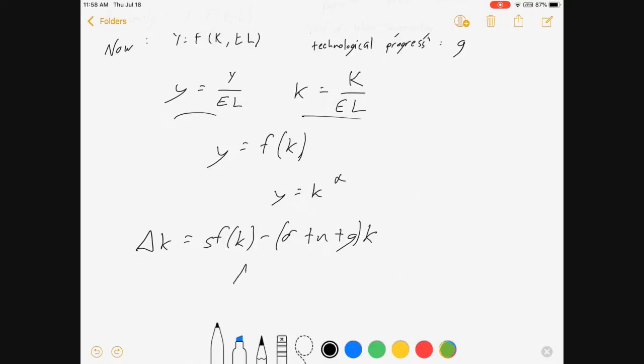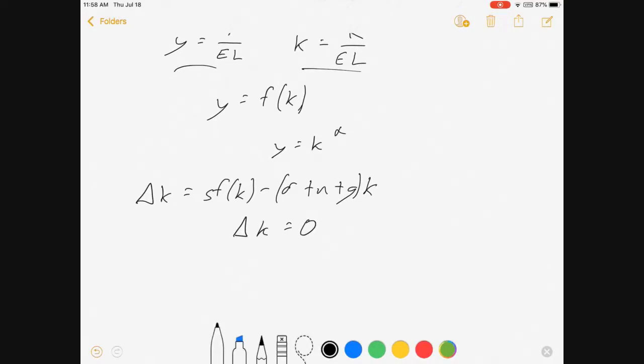Now, in the steady state, we set the change in capital equal to zero. So, we get s f of k equals delta plus n plus g times k.